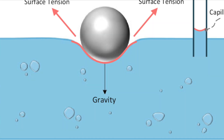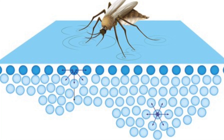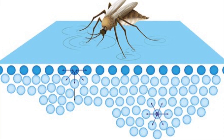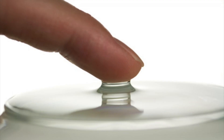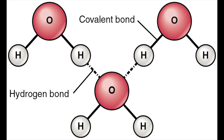Mostly, a ball being able to skip across water can be accredited to surface tension — a natural property of water that allows it to resist an external force due to the cohesive nature of its molecules as a result of the hydrogen bonding between them.